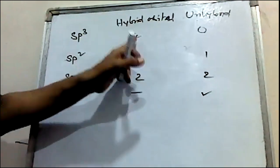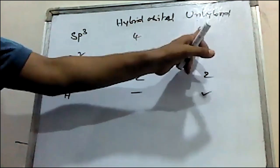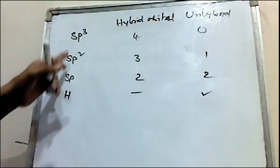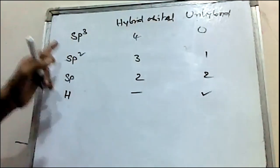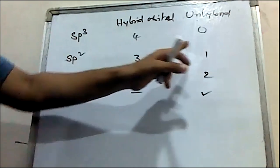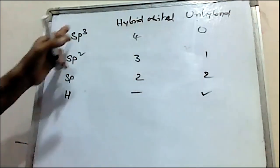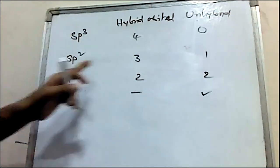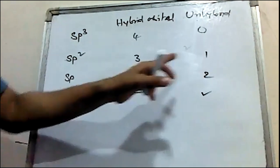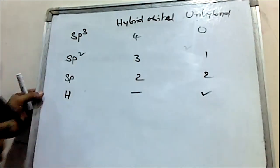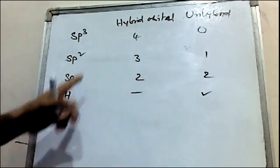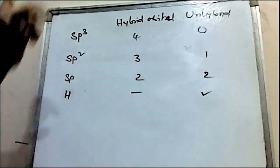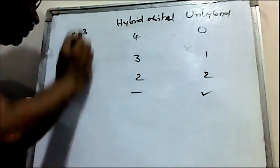There is no other orbital on this sp3 carbon. If the carbon is undergoing sp2 hybridization, there are three hybrid orbitals and one unhybrid orbital. Whatever hydrogens are present on the carbon, all those orbitals are unhybrid orbitals only, so they use only unhybrid orbitals.